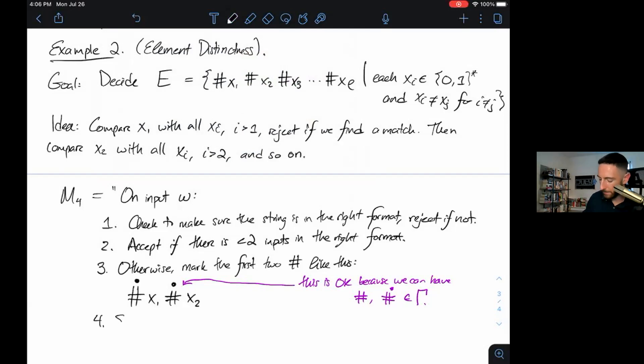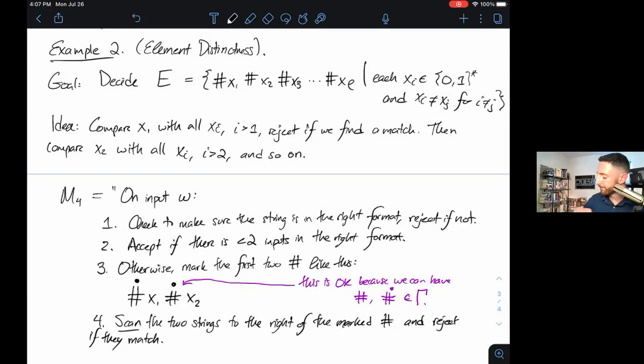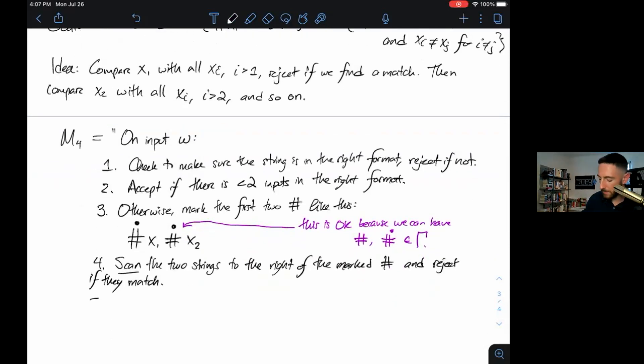Next, scan the two strings to the right of the marked pound signs and reject if they match. By scan, I just mean shuttle back and forth. x1 will be some ones and zeros, x2 will be some ones and zeros, and we'll have a Turing machine program that'll go back and forth between the symbols, and it will reject only if they match in all of their symbols.